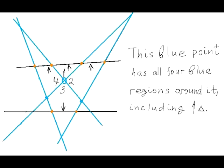Let's introduce a definition. Let's call a finite region that has exactly one non-blue side a blue region. Each existing non-blue line borders at least one blue region. Otherwise, this non-blue line could be painted in blue without violating the coloring rule, and this would contradict our assumption that x is the maximal number of blue lines. Any blue point can have up to four finite blue regions around it.